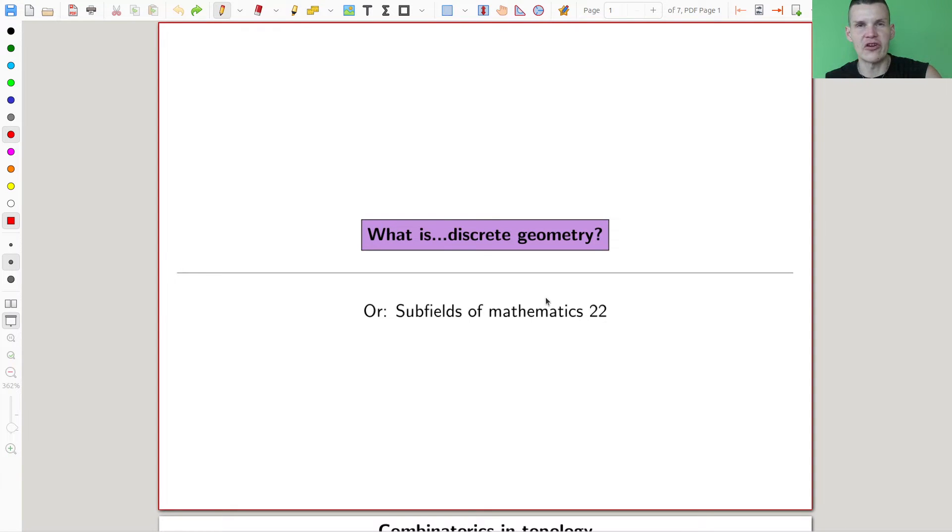Okay, welcome everyone to this continuation of what are my favorite fields, theorems, biased collection, whatever you want to call it. Very biased is called my favorite, what else could it be than very biased?